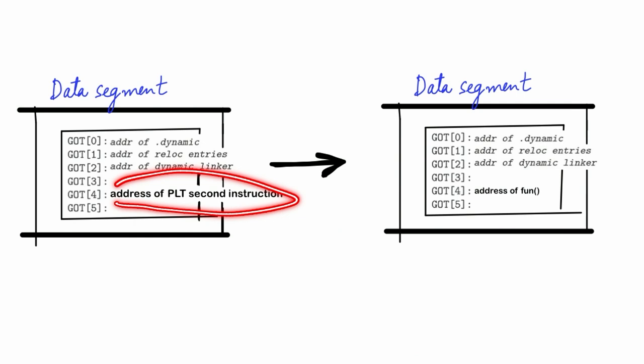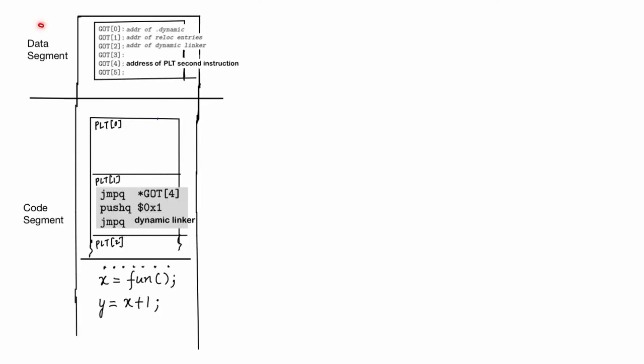Keep in mind an essential aspect of dynamic linker's functionality: once it resolves an external function or a call, it updates the address entry for that function in the GOT table. It directs it directly to the actual memory location of the function, and this saves the dynamic linker from resolving the same function again for future calls.